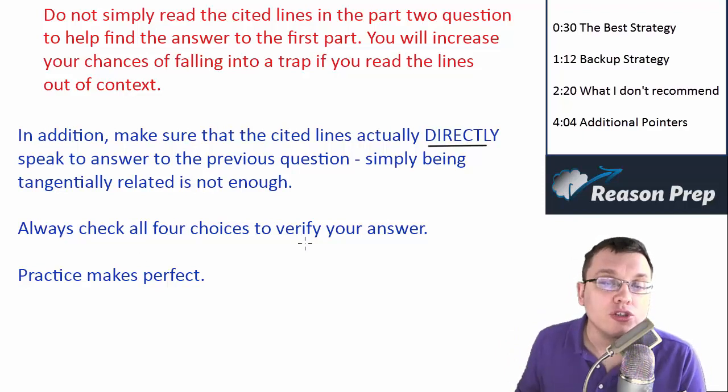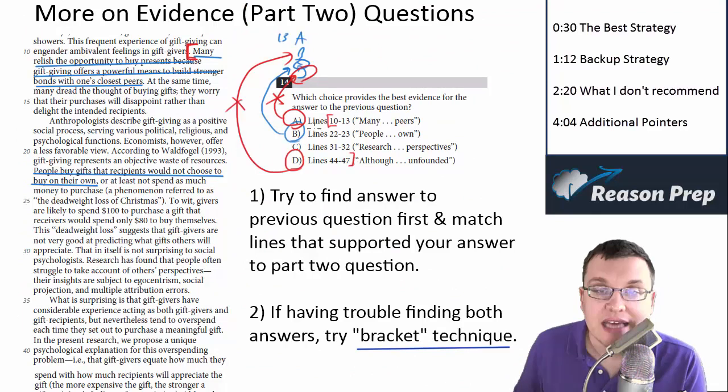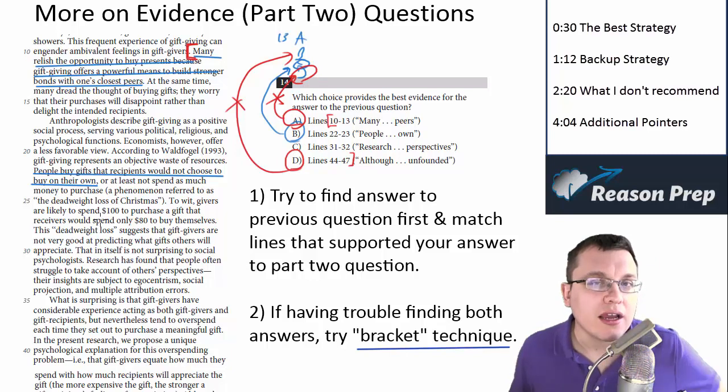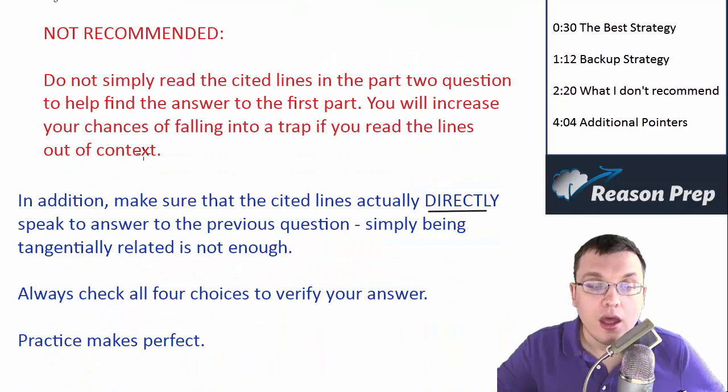Always check all four choices to verify your answer. Once you've picked, let's say B as the answer, you can go to A, C, and D, find those lines, and double-check - even out of context is okay - that there's no chance they could work. If you see that maybe D could work, then you need to go back and do more reading to double-check. You want to check all four choices to avoid running into issues. This is true of any reading question - always check all four choices.